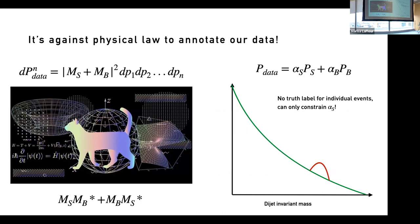We heard from Anna that they have problems annotating data simply because it's a lot of data and takes a lot of time and resources. For us, we physically cannot annotate our data because of quantum mechanics. Every time we have a proton collision at CERN, a Higgs is produced, it's not produced, and it's both produced and not produced at the same time — superposition of both. We can never label our data. The only thing we can do is measure things a trillion times and try to extract amplitudes of things being background only or signal. There's no labeling.